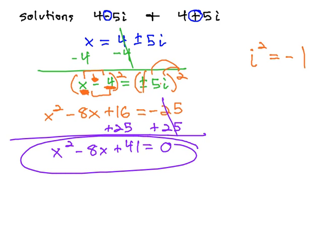This is the quadratic that, when you would solve it, would give you the solutions 4 minus 5i and 4 plus 5i.